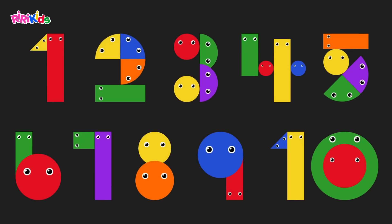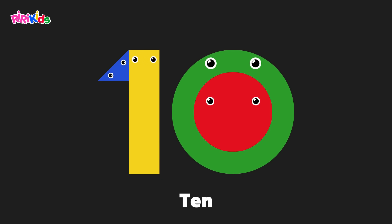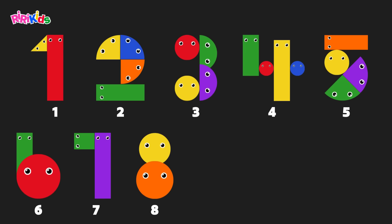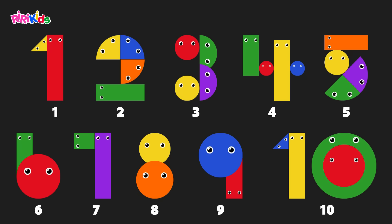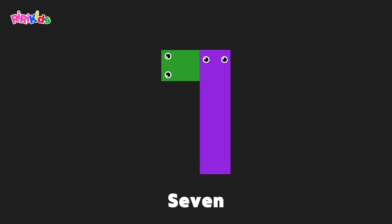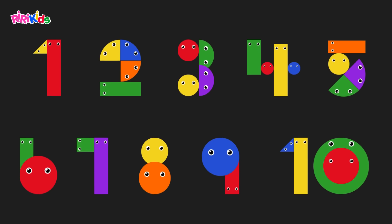One, two, three. Now we can count to ten. Let's start counting again. 1, 2, 3, 4, 5, 6, 7, 8, 9, and 10. 1, 2, 3, 4, 5, 6, 7, 8, 9, and 10. 1, 2, 3, 4, 5, 6, 7, 8, 9, and 10. Now we can count from 1 to 10.